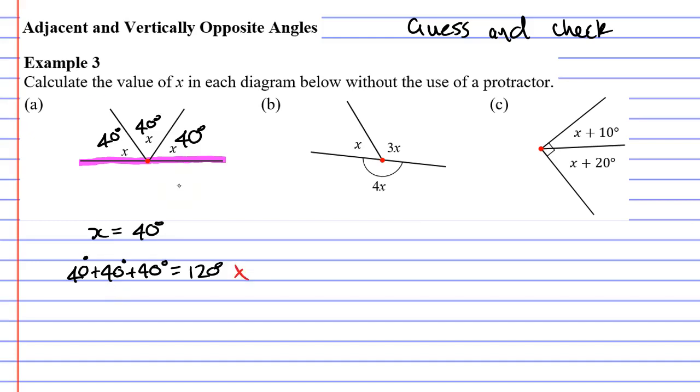x cannot equal 40 degrees. So let's try something else. Let's try x equals 60 degrees this time. What's going to happen then? Well if they are all 60 degrees, 60 plus 60 plus 60 equals 180 degrees. So this must be the correct value for x. x must equal 60 degrees.